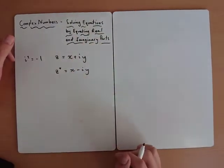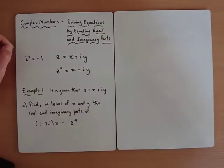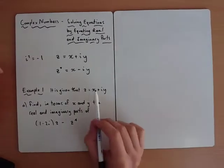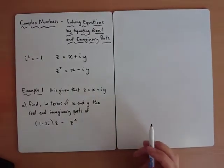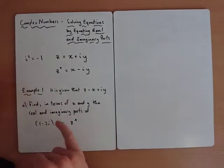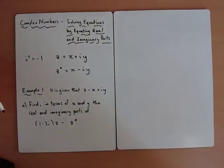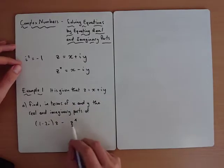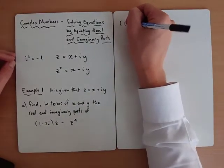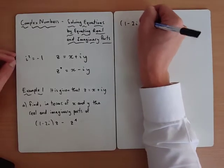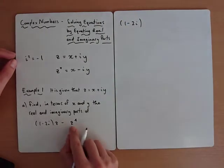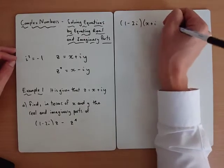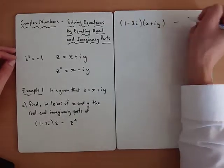We'll look at the equating part when we've done the example. The first part says: given Z is equal to x plus iy, find in terms of x and y — meaning x and y will appear in our answer — the real and imaginary parts. We need to replace Z with the general complex number x plus iy, and Z* becomes x minus iy.